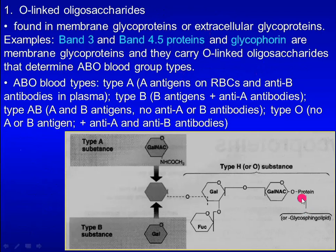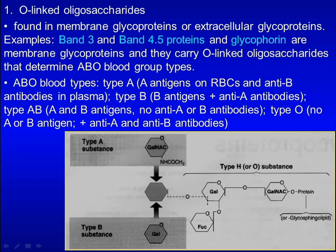This represents a glycoprotein. The first two sugars, galactose and N-acetylgalactosamine, are attached to the hydroxyl group of either serine or threonine. If the third sugar transferred to the carbohydrate chain is N-acetylgalactosamine, it will produce A antigens. If the third sugar transferred is galactose, it will yield B antigens.